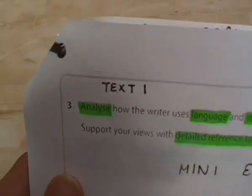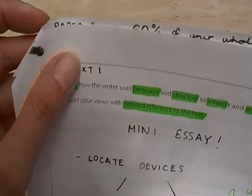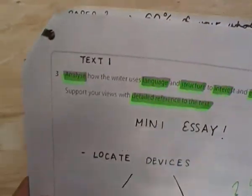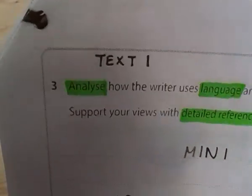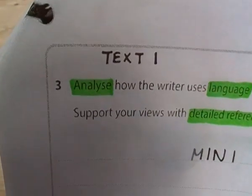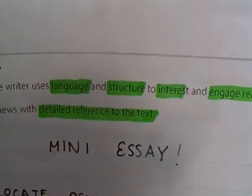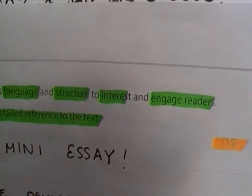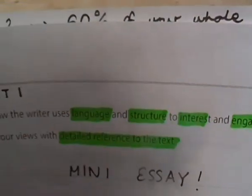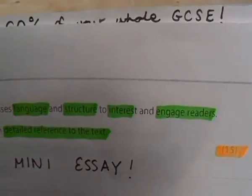So we've got the question here — we'll be still looking at the first text by the time we get to Question 3. This is the analysis question, so we've got to analyse how the writer uses language and structure to interest and engage readers. Nice and straightforward.